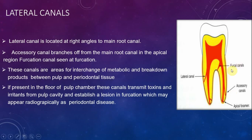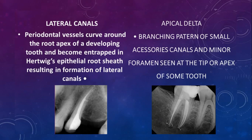These canals are areas for interchange of metabolic and breakdown products between the pulp and the periodontal tissue. If any infection results in the pulp, it can reach the periodontium, and vice versa — if infection exists in the periodontium, it can reach the pulp.